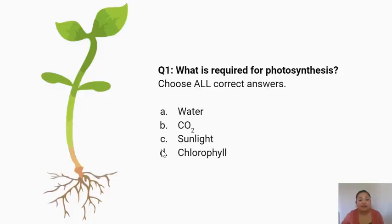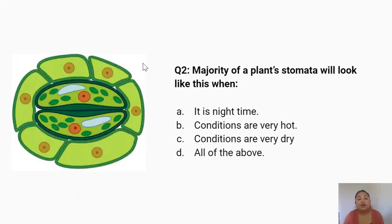Let's check your understanding. Question one: what is required for photosynthesis? Choose all correct answers. A. Water. B. Carbon dioxide. C. Sunlight. D. Chlorophyll. Question two: the majority of a plant's stomata will look like this — closed — when... A. It's night time. B. Conditions are very hot. C. Conditions are very dry. D. All of the above.